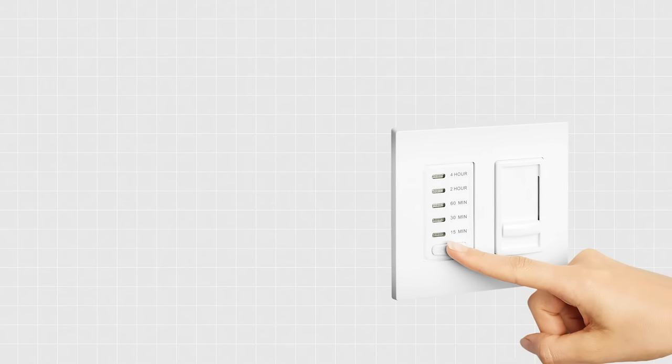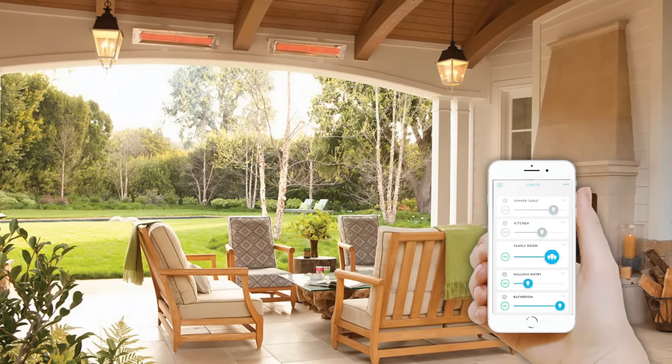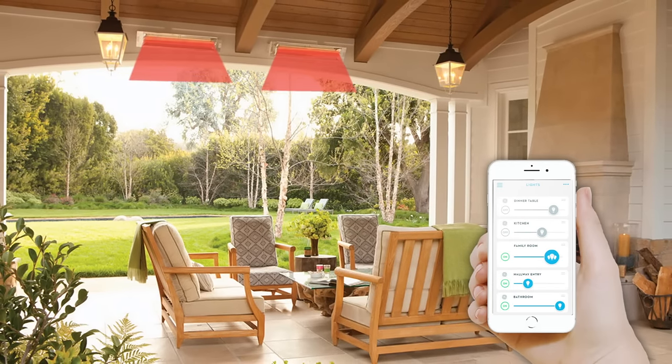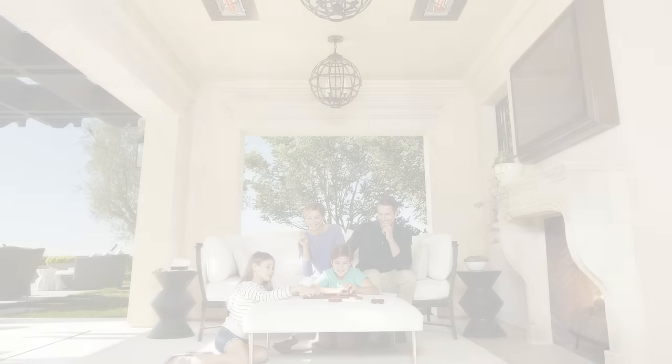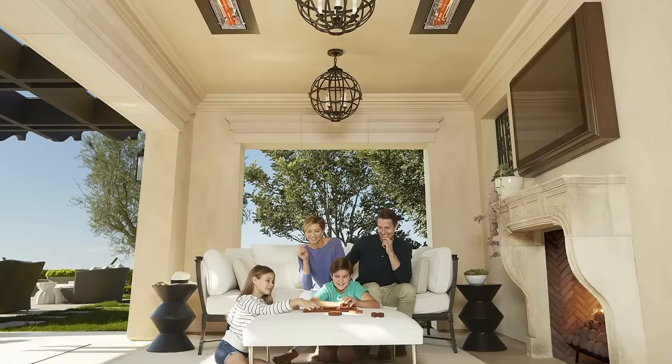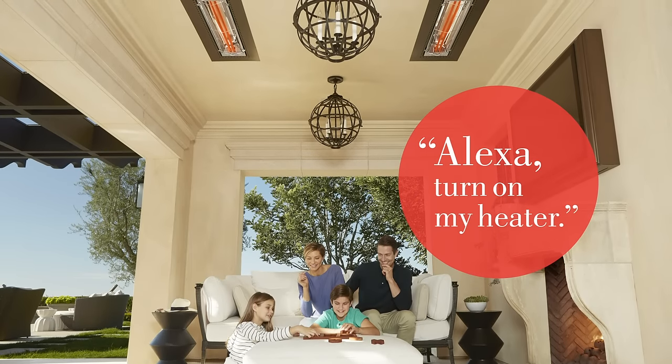Infratech's universal control package comes with a Leviton dimmer to control each heating zone, or it can be used with the dimmer of your choice to coordinate with the decor of your home or property. With the universal control package, you can also control your heating system remotely via a smartphone or tablet, or enjoy hands-free voice activation using Wi-Fi or Bluetooth-compatible hardware that can be purchased from a third party to achieve this function.